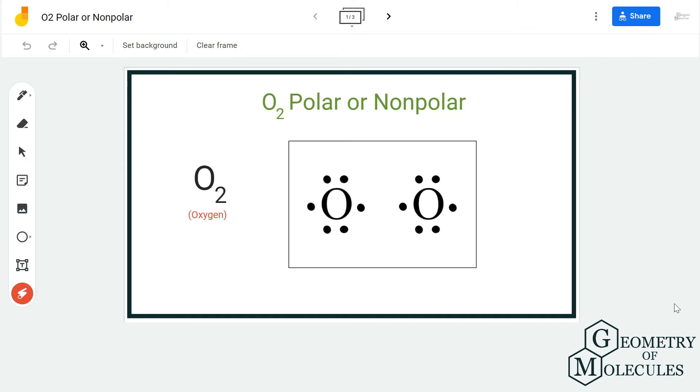Generally, polarity is a concept for such molecules in which there are differences of electronegativities between atoms involved in the structure. But here we have oxygen atoms, and there will be no difference of electronegativities in either of these oxygen atoms.